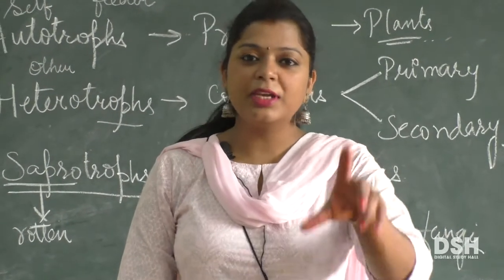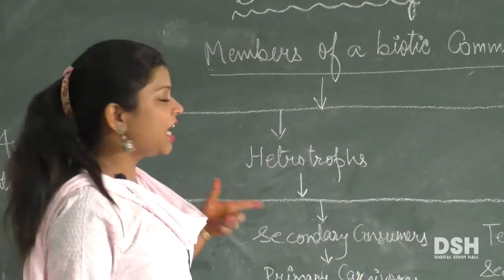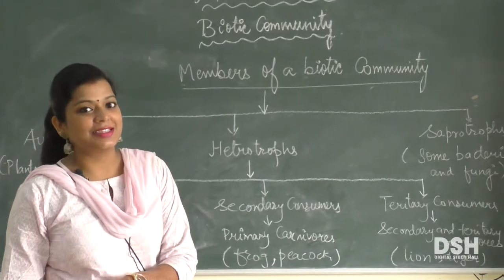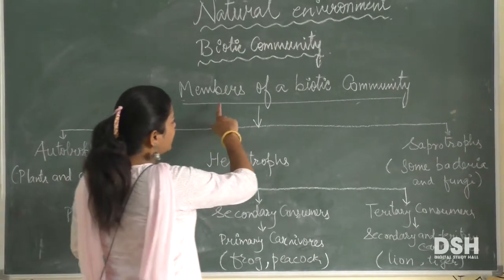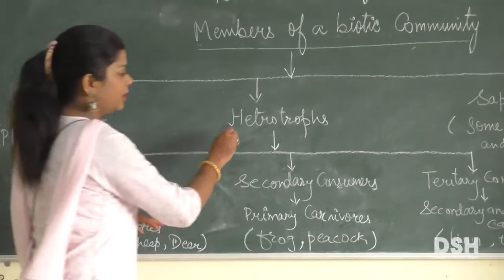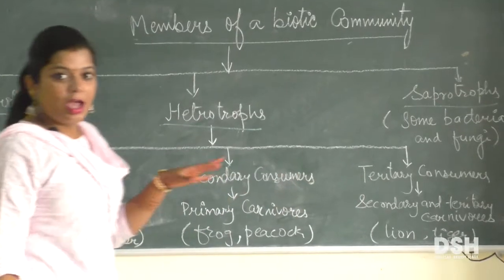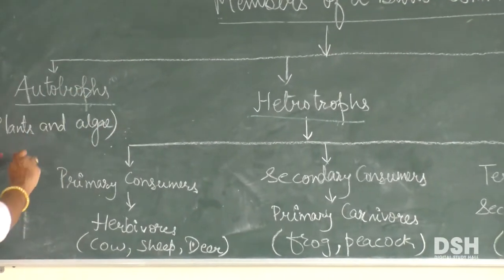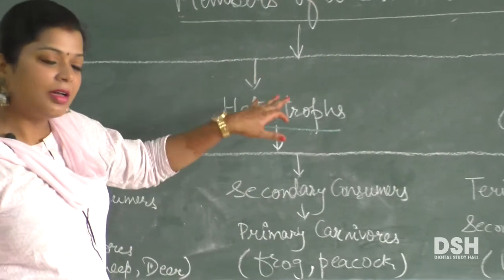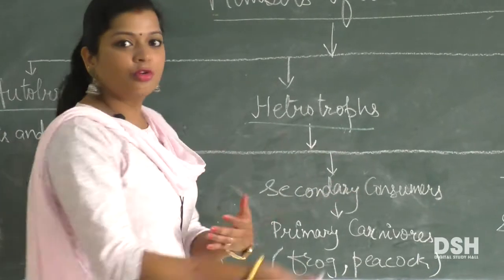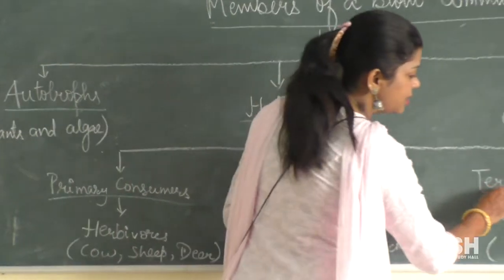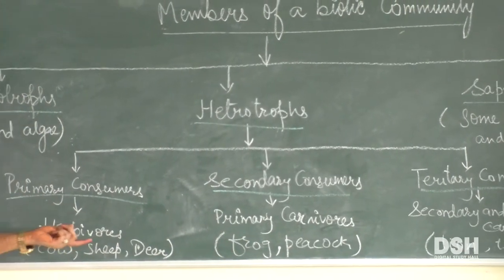Now I am making a chart. Students, I have made a chart to explain what I have told you — the members of a biotic community. First, our members are autotrophs, which are self-feeders. Second are heterotrophs, which are feeders and consumers. These include primary consumers, secondary consumers, and tertiary consumers. Primary consumers are herbivore animals that feed on plants, for example cows, sheep, and deer.